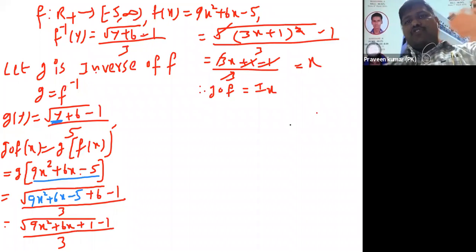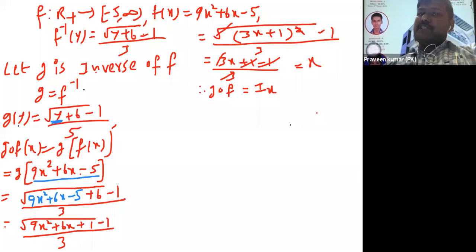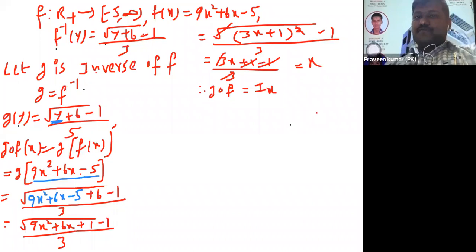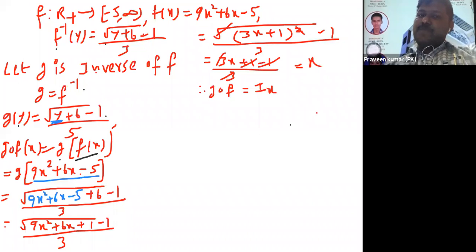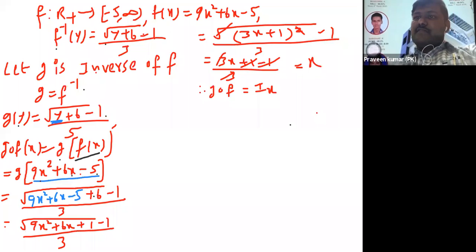In the given question only f inverse of y is given, so I started the problem from: let g be inverse of f, g is equal to f inverse. g of y is root of y plus 6 minus 1 by 3. Consider g circle f of x — what is f of x? It is 9x squared plus 6x minus 5. What is g of y? Root of y plus 6 minus 1 by 3. That y I replace with 9x squared plus 6x minus 5.